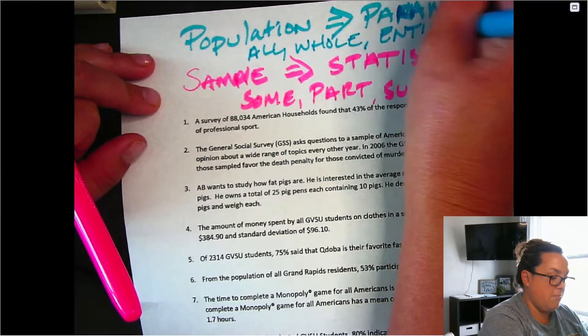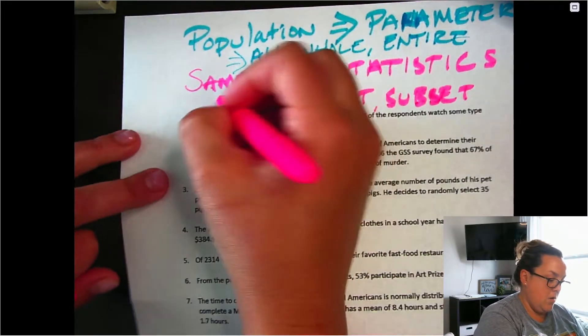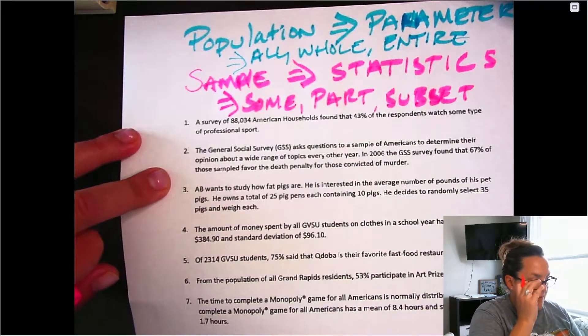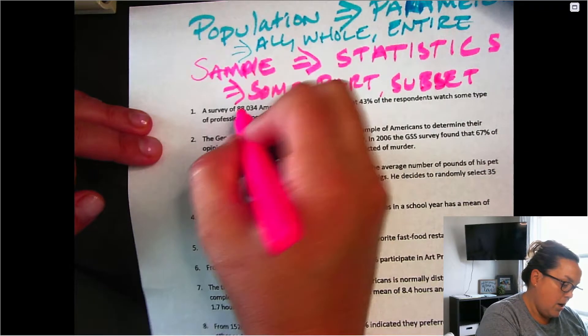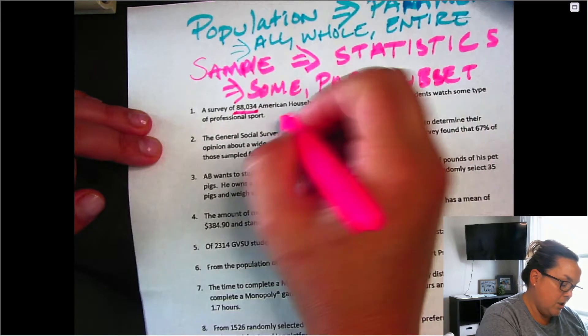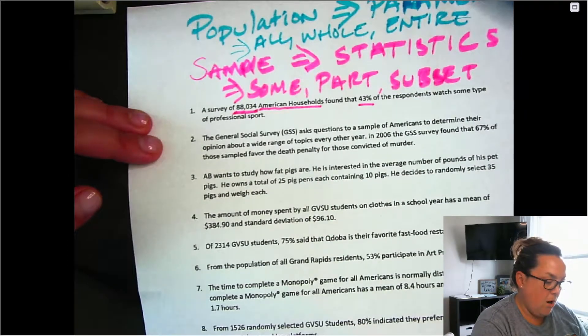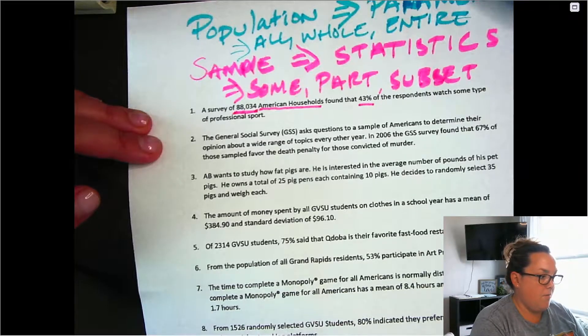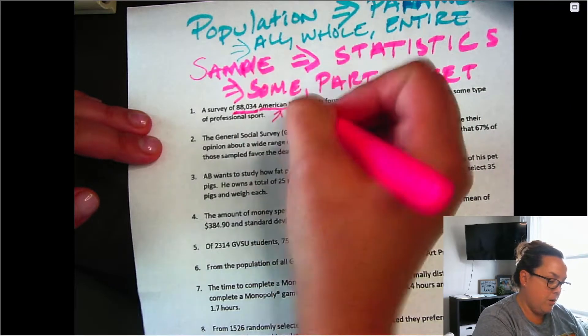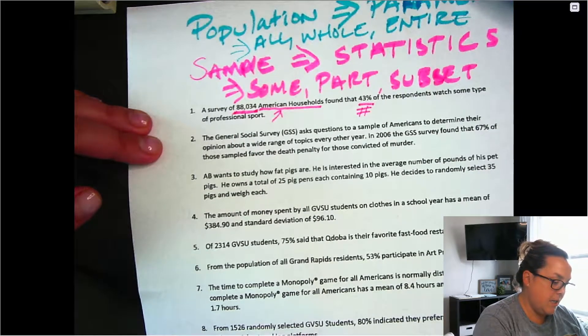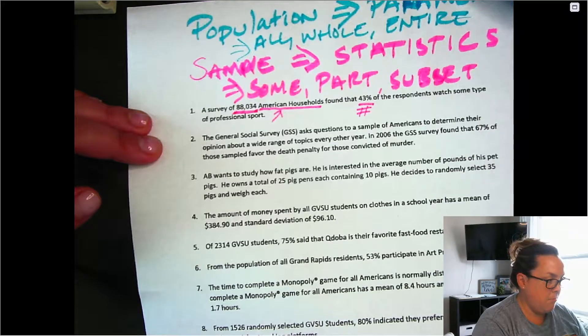So those are the type of keywords that we're going to be focusing on when we look at these 10 different scenarios. Starting out, a survey of 88,034 American households found that 43 percent watched some type of professional sport. So here's the number and here is the group. So is that an all whole entire group? Or is that a number that's quite obviously less than the population?